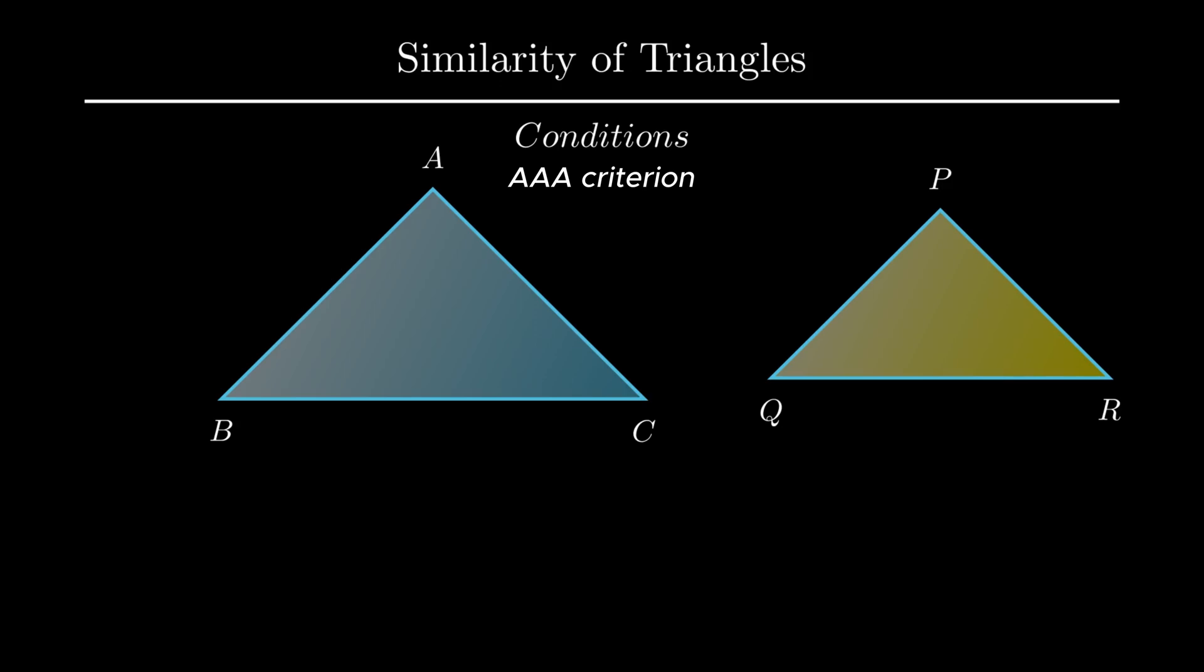Consider triangle ABC and triangle PQR such that both angle A and angle P equals 45 degree. Angle B and angle Q measure 60 degree. Therefore, by interior angle sum property, angle C and angle R are calculated as 180 minus 105 which is equal to 75 degree. Therefore, by angle-angle-angle criteria, the two given triangles are said to be similar.